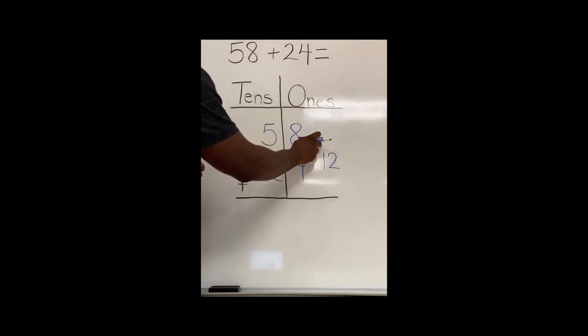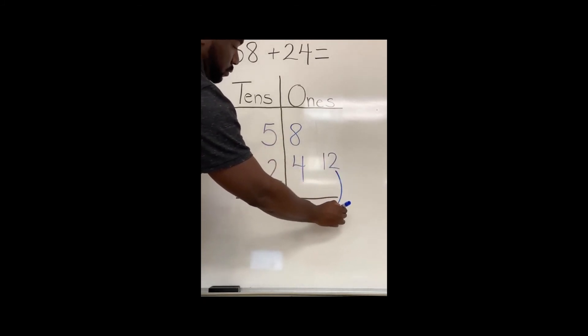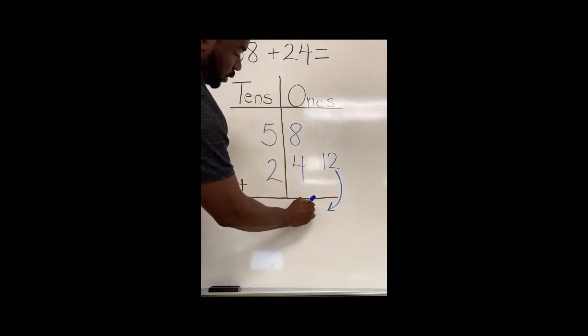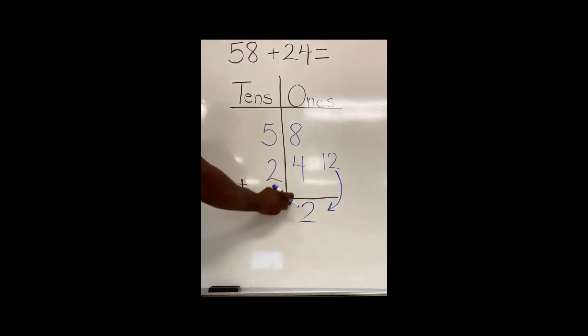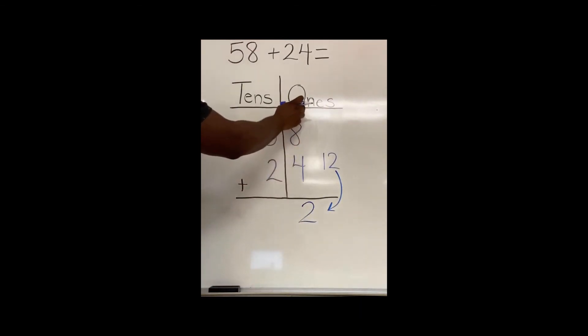I have one ten and two ones. My ones place, or the two ones that I have left over, comes down to the bottom to stay in my ones place. My one ten that I made, or my group of ten, needs to go over to the tens place.